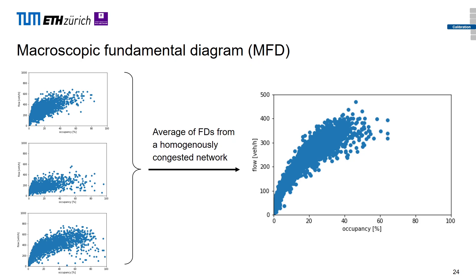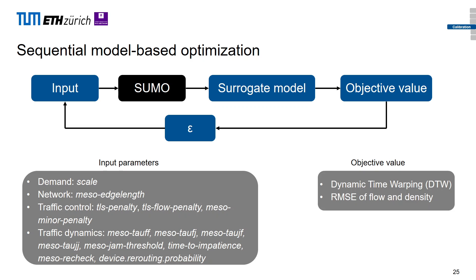About the MFD in roughly 20 seconds: on the left you see flow-occupancy relations from three different loop detectors in Zurich — not very smooth individually. But if we aggregate them, we get the plot on the right, which is much smoother. We lose some information about congestion, but this smoother function still captures traffic control information across a part of the network, and we use it as our objective value for calibration.